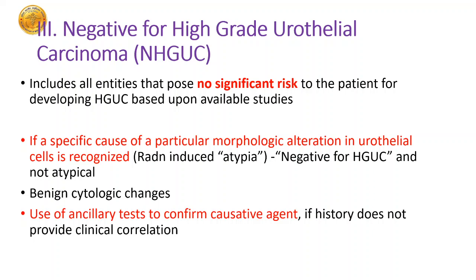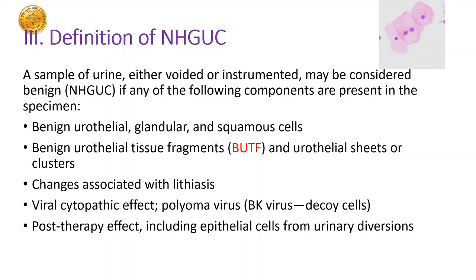The first category of the Paris classification is Negative for High Grade Urothelial Carcinoma — these pose no significant risk to the patient for developing HGUC, based on several studies. If you find a specific cause for morphologic alteration in the urothelial cells, please mention negative for HGUC and don't write atypical. These are called benign cytologic changes. For this category we can use ancillary tests to confirm a positive agent if there is no corresponding history available.